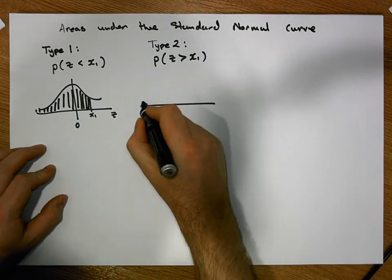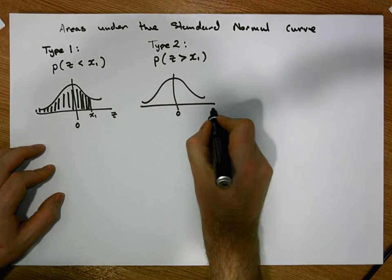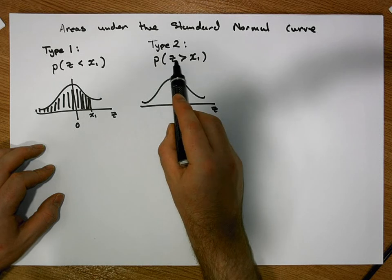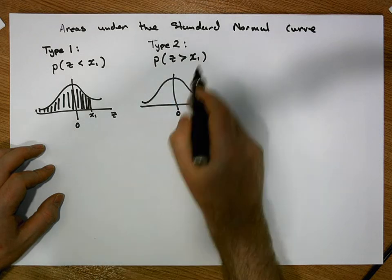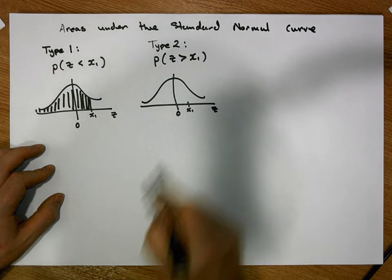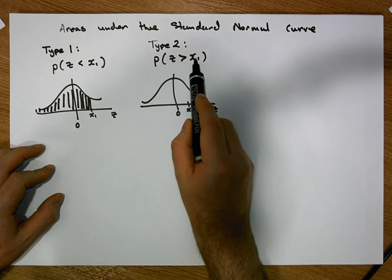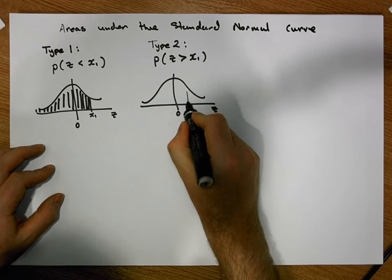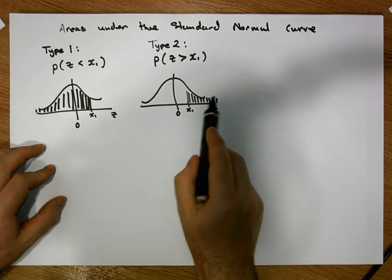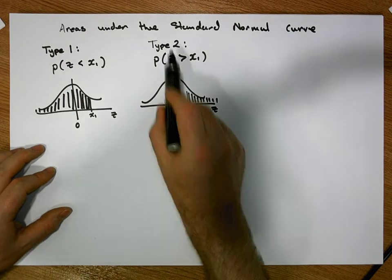Once again it's with respect to the standard normal distribution — a bell-shaped curve centered on zero — and the horizontal axis represents our z variable. The probabilities we want are z values greater than a particular positive value x1. So x1 is to the right-hand side of zero and we're interested in the area under the curve on the right-hand side of x1, or really a right-hand tail area.